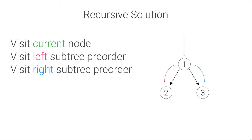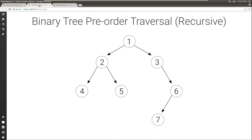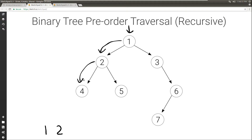Let's run through a quick example of how this would work. We start with root 1, and we first visit the root — in this case we're just going to print it. Then we visit the left subtree pre-order, so we're going to call it with root 2. First we visit the current node, and then we visit the left. Again, we visit the current node and then the left, but there's nothing on the left, so we're done.